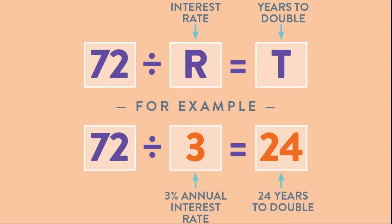If inflation decreases from 6% to 4%, an investment would be expected to lose half its value in 18 years instead of 12. At the current 2% inflation rate, 72 divided by 2 equals 36 — so your money would lose half its value in 36 years. The Rule of 72 can also be applied across all kinds of durations, provided the rate of return is compounded annually.